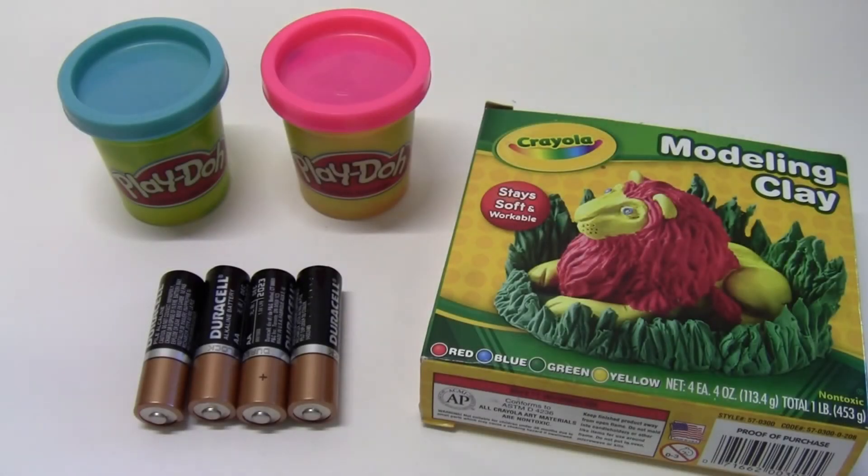There are some additional materials that do not come with your Squishy Circuits kit that you will have to purchase separately. That includes four AA batteries, some Play-Doh, and some modeling clay. You can also make your own homemade Play-Doh and modeling clay by following the directions on our website. You can find the link to these directions in the description of this video.